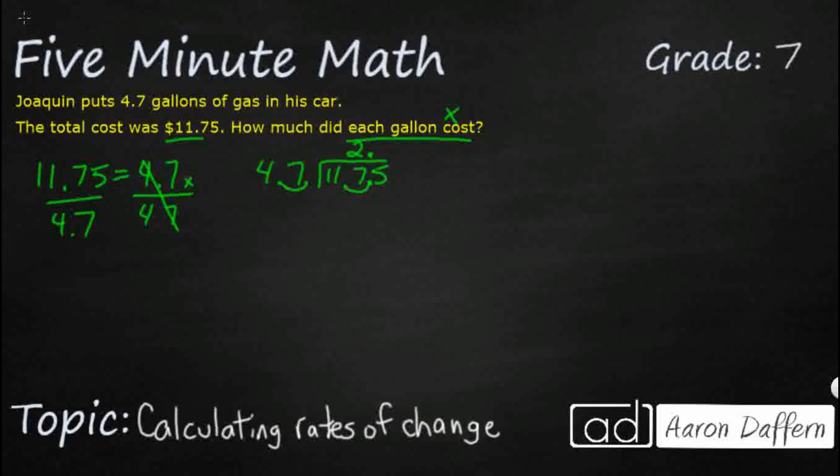So 47 goes into 117 at least twice. So double that. That is going to be 94. So we're just going to get back to our regular long division here. We've got three. We've got two.